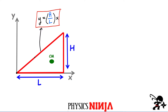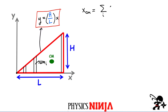What I'm going to do now is slice this triangle up into a whole bunch of smaller pieces. Each one I'll call a small mass delta M. Each one of these delta M's has a mass, and my goal is to first calculate the X position of the center of mass. If you had a series of point masses, you sum each mass times its position, then divide by the total mass.